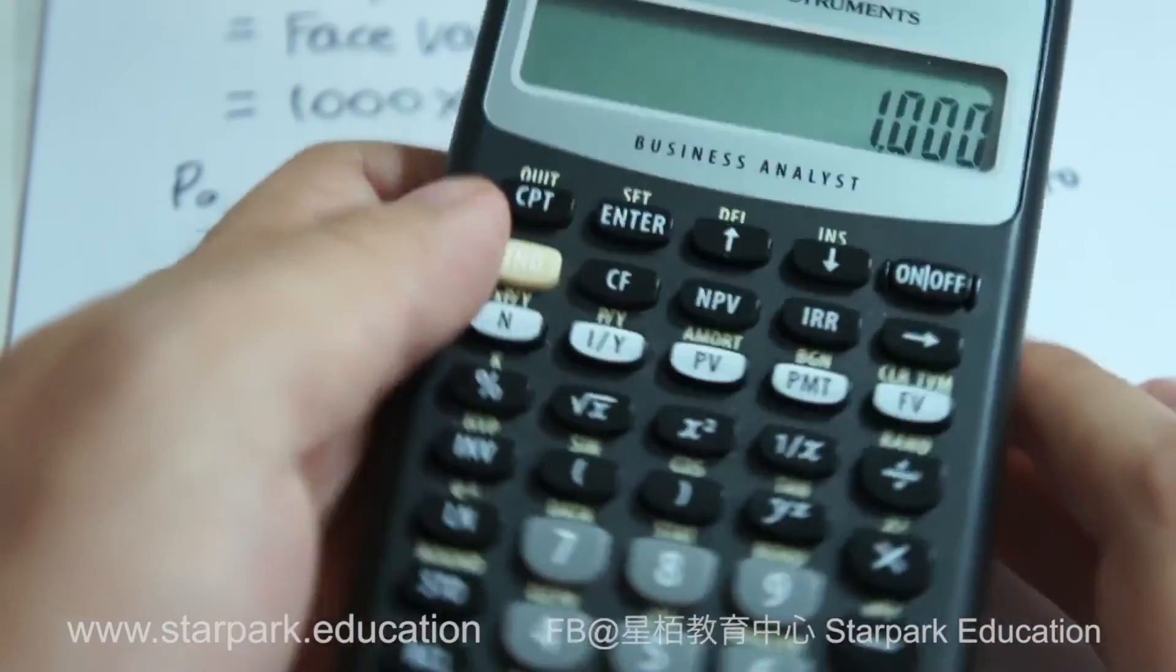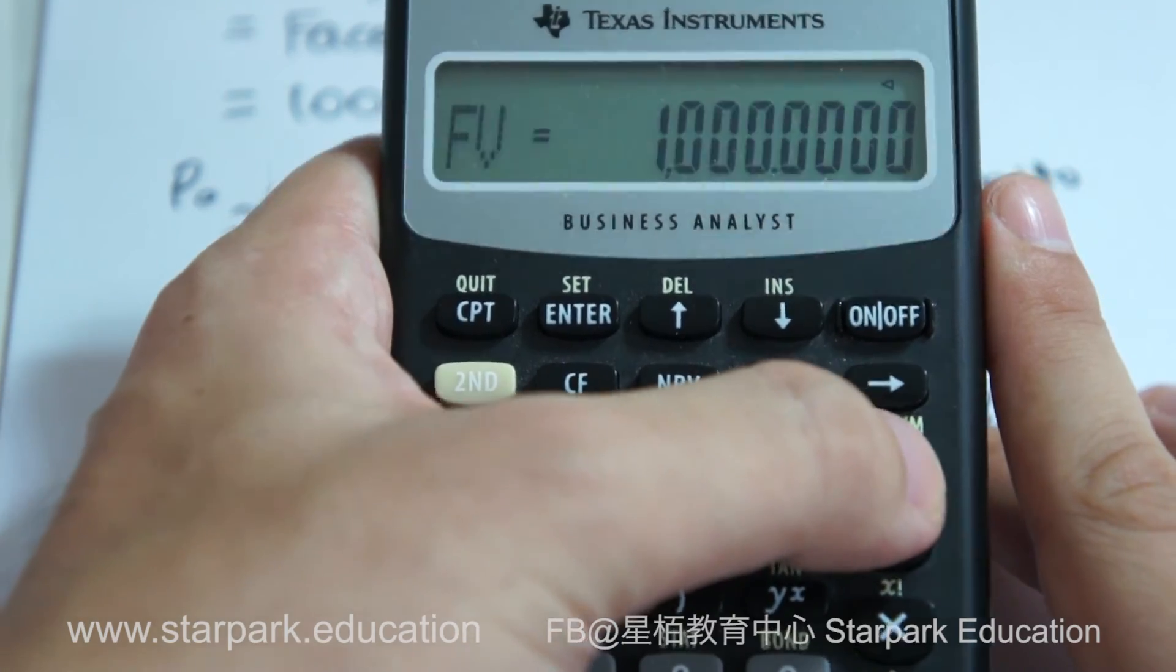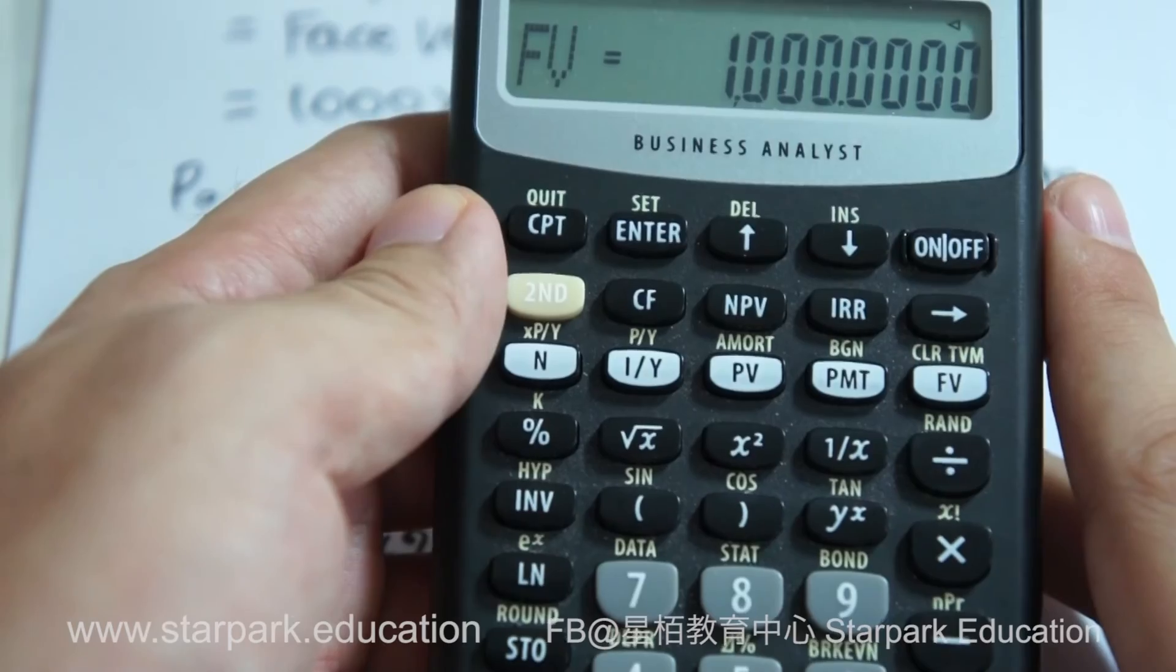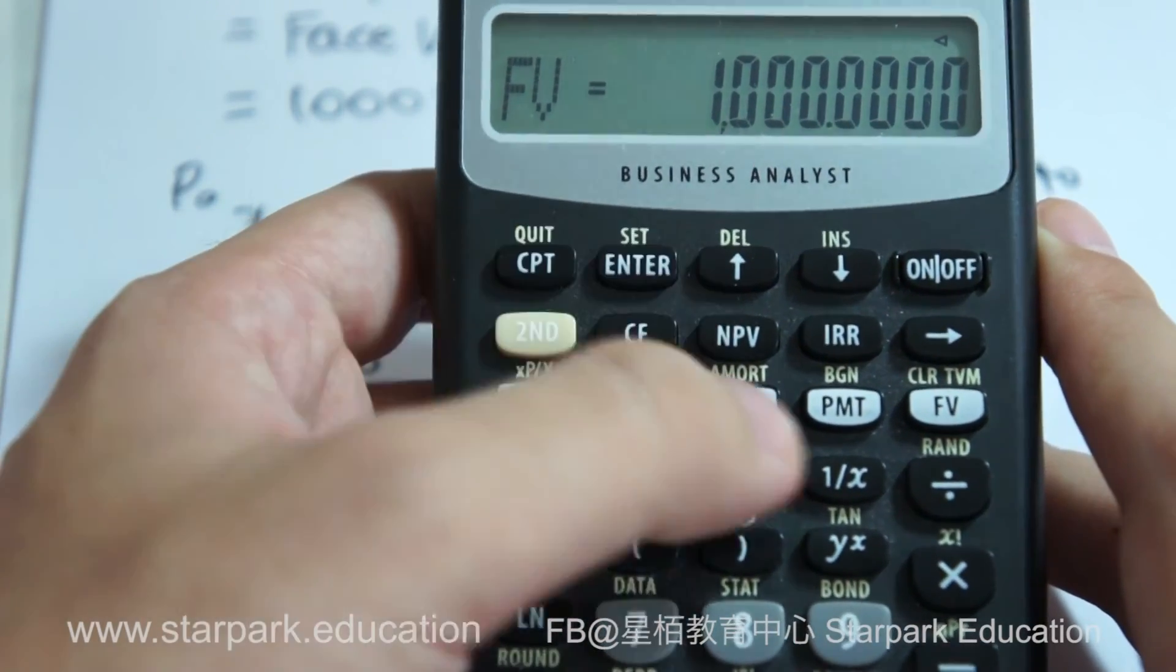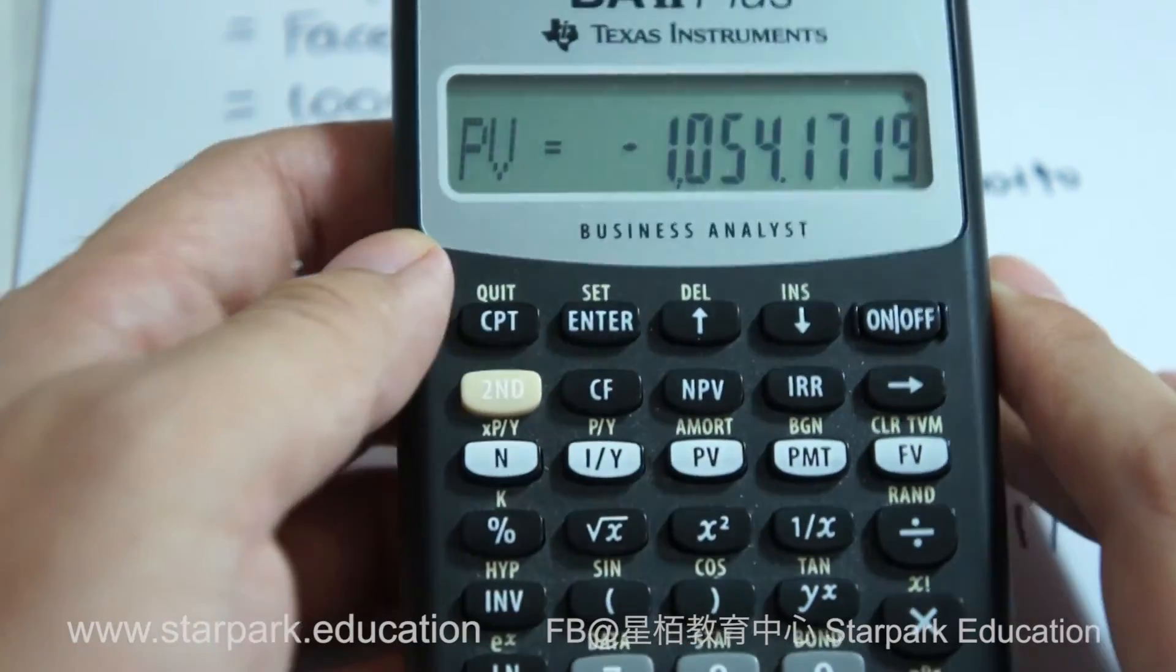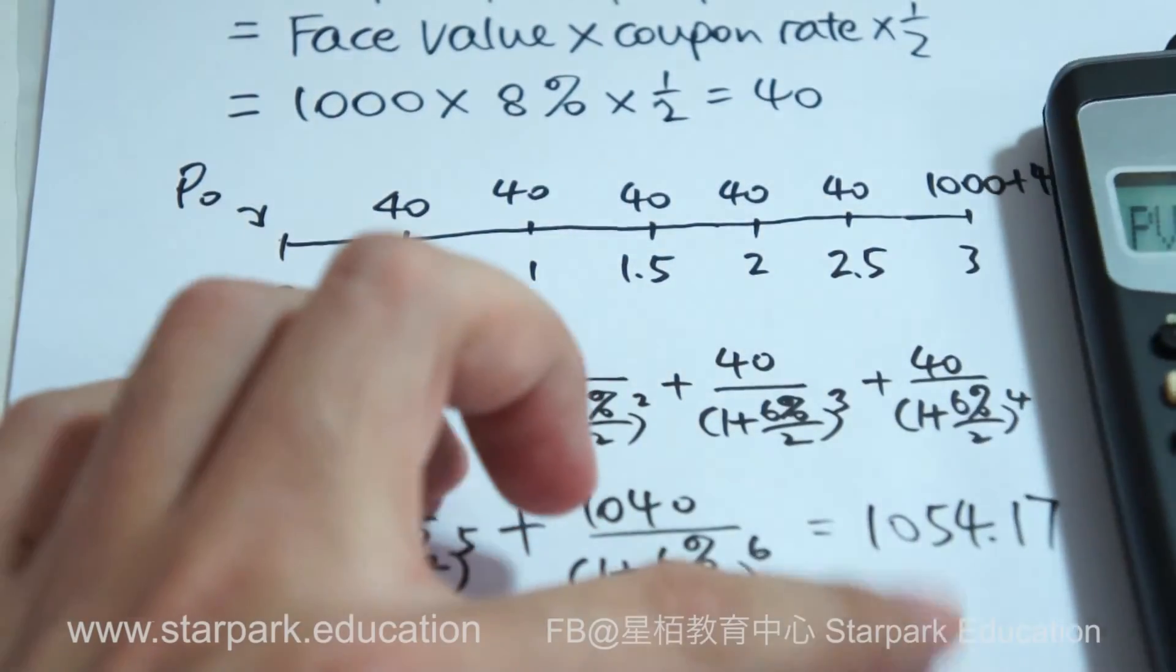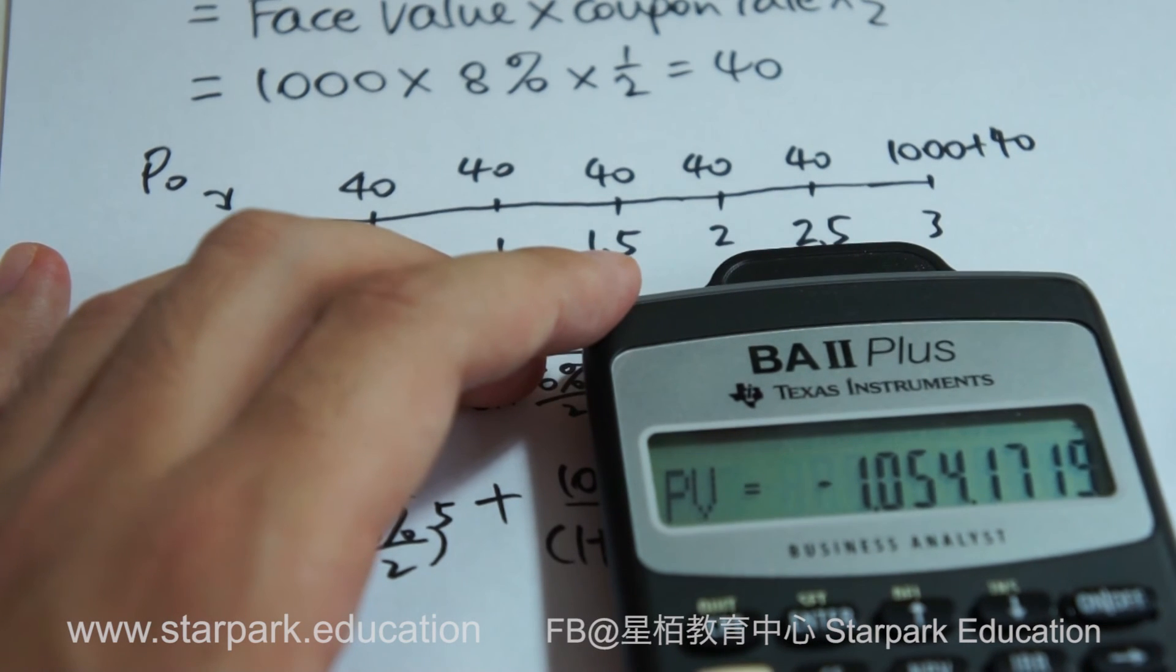And at last, of course, it's 1,000, which is the face value, and then you have to input the FV. Make sure that every time, 4 data for calculating the bond price, and what we need to calculate should be the compute of the bond price, which is compute and PV. So 1054.17, which is the same answer as here. 1054.17, so that's it.